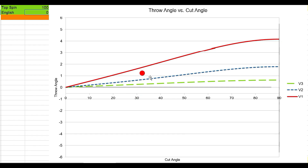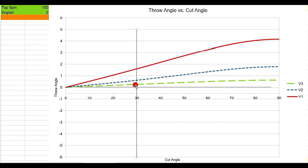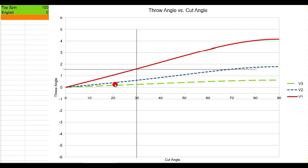Let's look at the 30 degree cut to begin with. In this diagram, green is fast speed, blue is medium speed, and red is slow speed. At 30 degrees on a slow speed, you would have to overcut the ball by a degree and a half to have the ball go to your exact destination. For a medium speed, you would have to overcut by three quarters of a degree, and at a fast speed, by about half a degree.